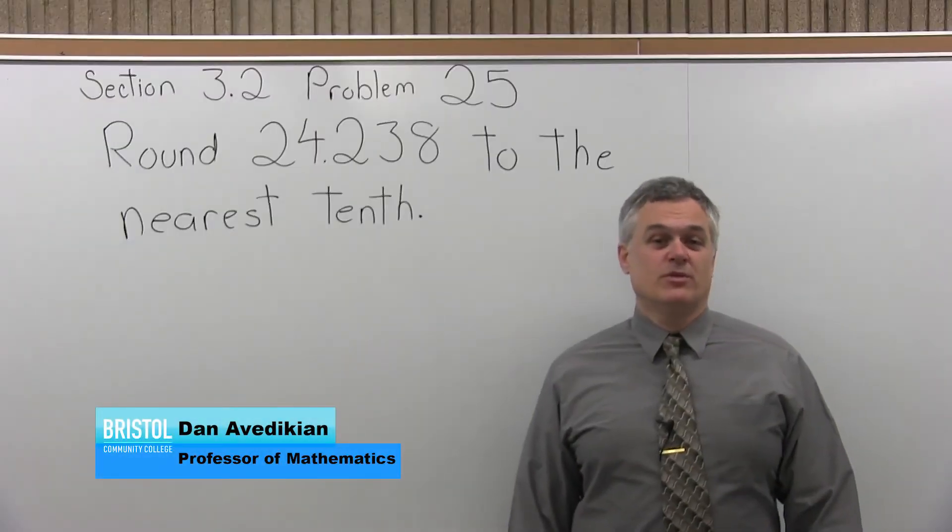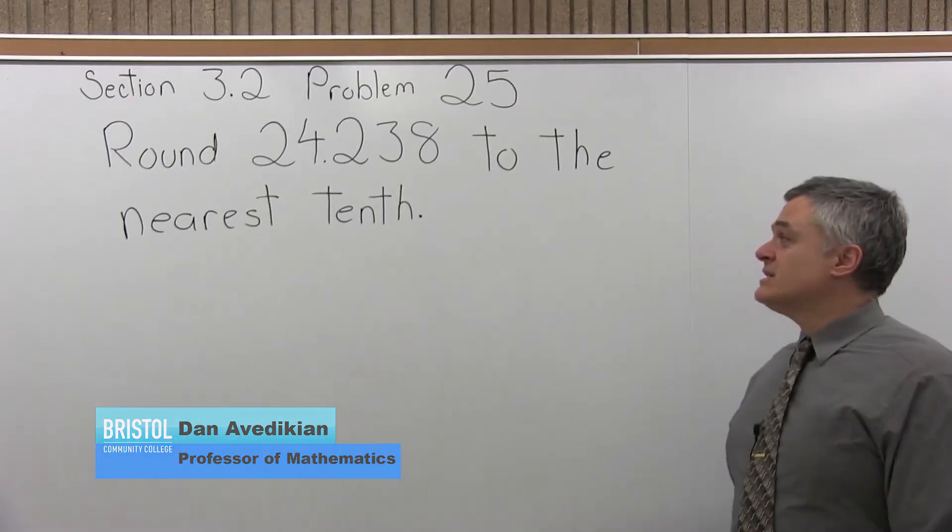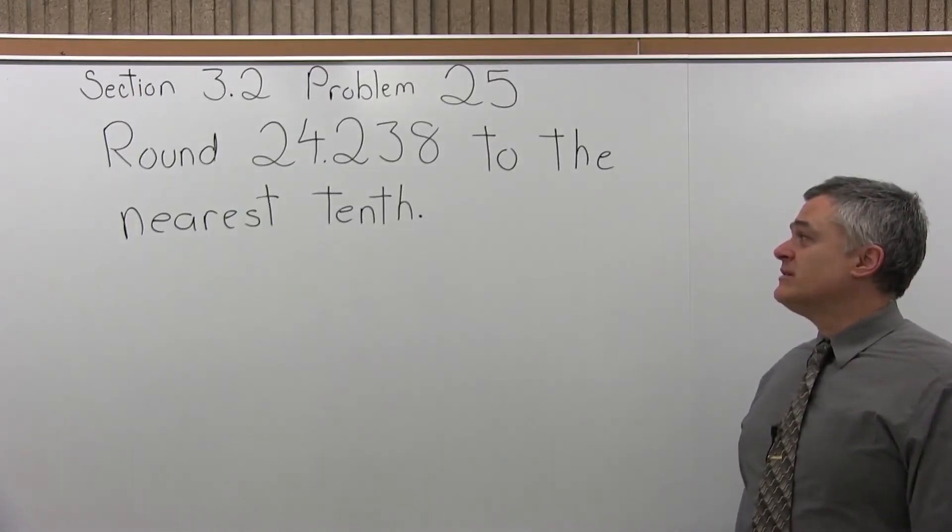This is Section 3.2, Problem 25. It says round 24.238 to the nearest tenth.